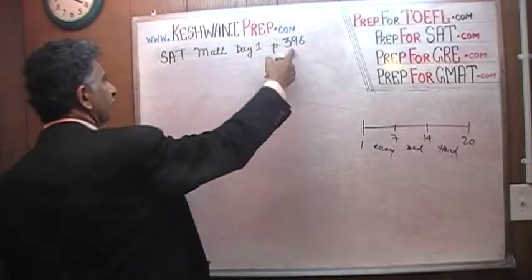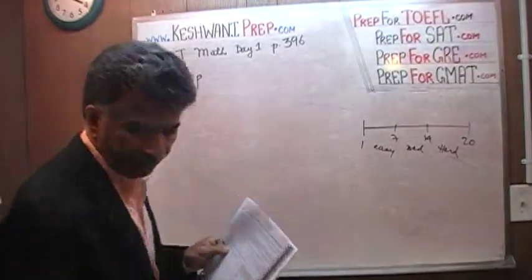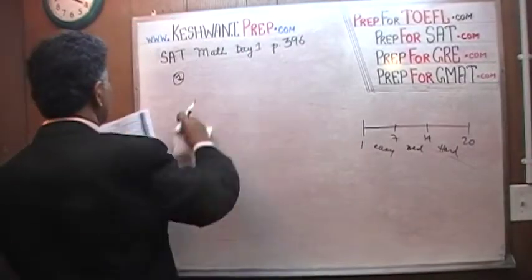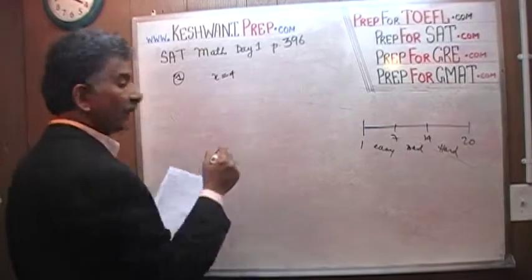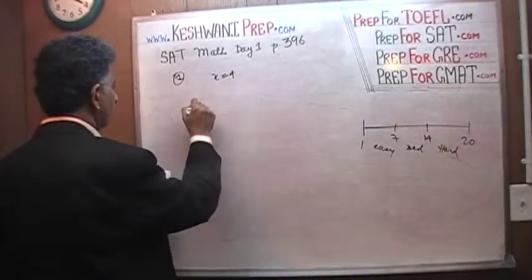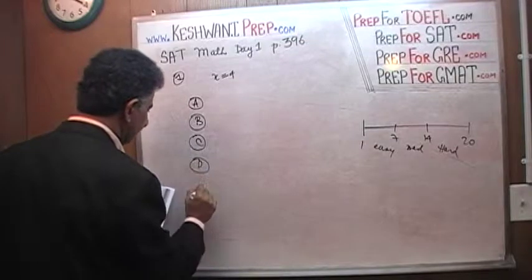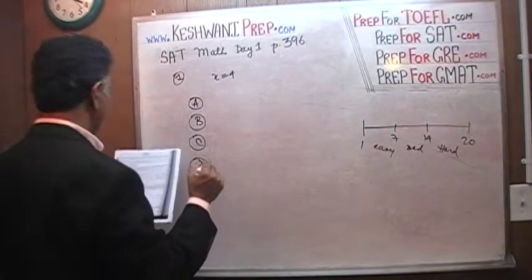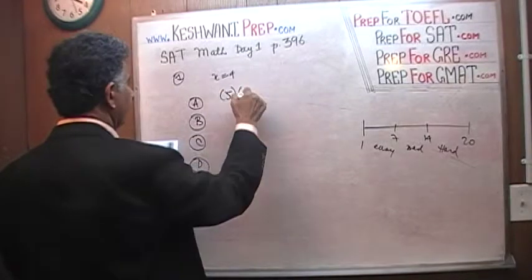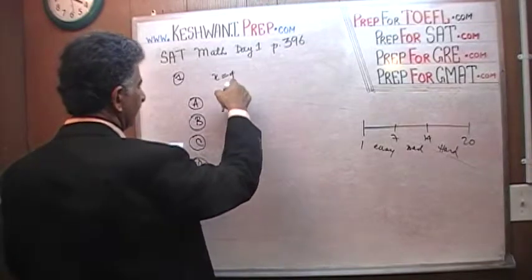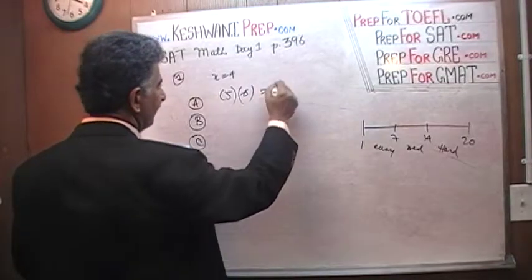Page 396. It says: if x equals 4, which of the following is greatest in value? Option A is (x+1) times (x+2). With x=4, that's 5 times 6, which equals 30.